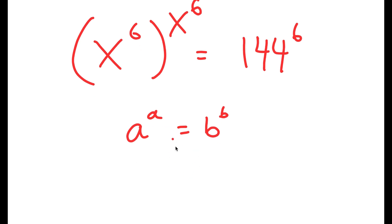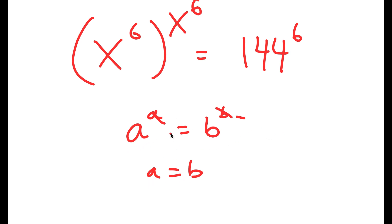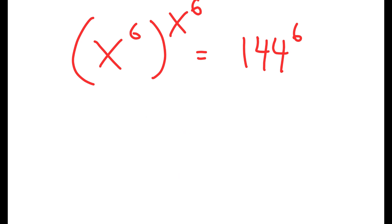That way, this turns into a is equal to b. Because if I have something in the form a to the power of a is equal to b to the power of b, we can just cancel out the bases and it turns into a is equal to b. We already have a equals a on the left-hand side because both the base and the exponent are x to the power of 6.